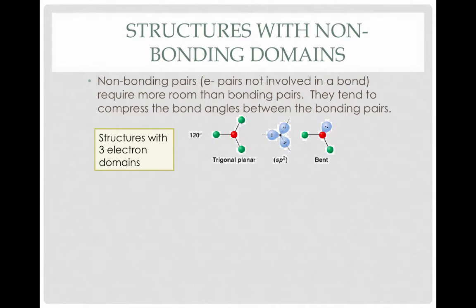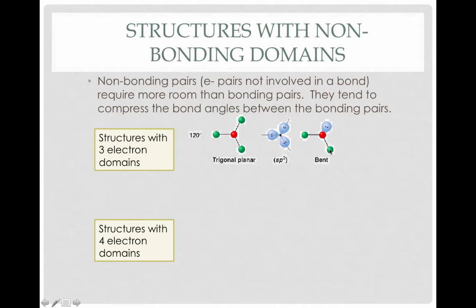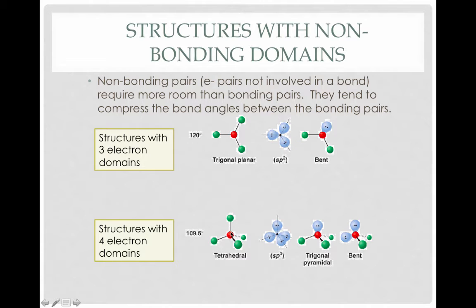Let's start with structures that have three electron domains. When all three domains form bonds, we have a trigonal planar molecule. However, if two of the domains form bonds and one remains non-bonding, we end up with a bent structure. Structures with four electron domains start as tetrahedrals when all four domains have formed bonds. If we have three bonding domains and one non-bonding domain, we get a trigonal pyramidal molecule. If we have two bonding domains and two non-bonding domains, we get a bent structure.